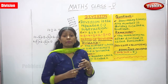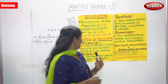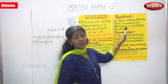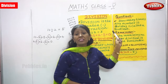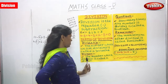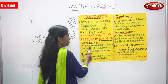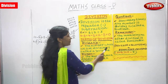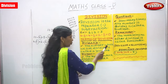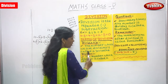Now we are going to discuss the terms of division. What are the terms of division? That is: dividend, divisor, quotient, and remainder. These are the major terms you must know and learn. The number which we are dividing is called a dividend.